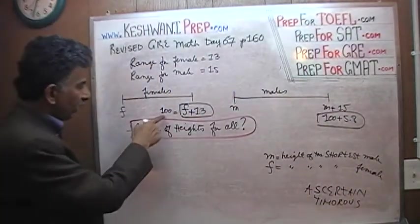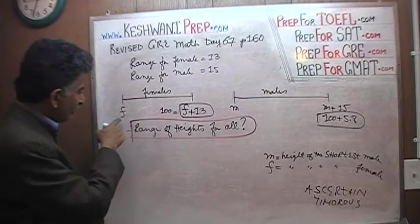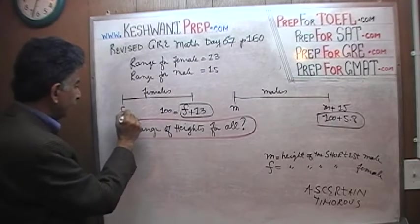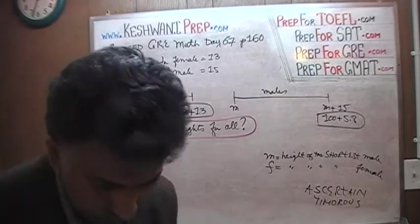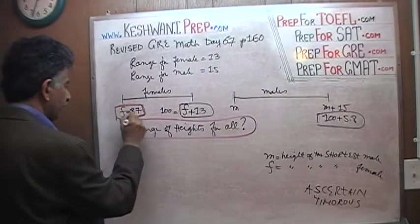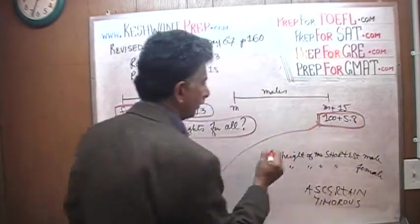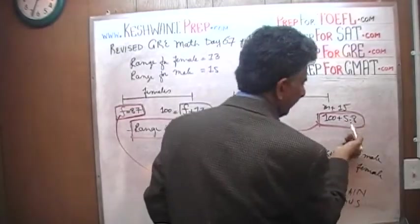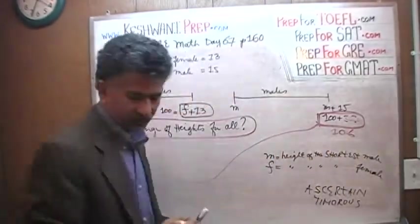If the tallest female is 100 inches, then the shortest female must be, since she is 13 inches shorter than the tallest one, must be 87. Voila. We have our range. Our range goes all the way from the shortest female, which is 87 inches or 87 meters or 87 yards, take what you like, all the way up to 106. Let's change this to 106. 5.8 is annoying. So there's your range. From 87 to 106 is your range.